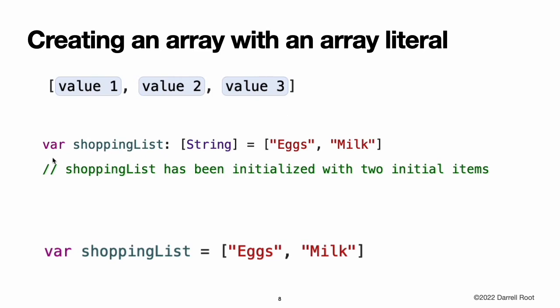Creating an Array with an Array Literal. This example shows how to create an array called shoppingList to store string values. The shoppingList variable is declared as an array of string values, written as [String]. Because this particular array has specified a value type of string, it is allowed to store string values only. The shoppingList array is initialized with two string values, eggs and milk, written within an array literal. The shoppingList array is declared as a variable with the var introducer and not a constant with the let introducer, because more items are added to the shoppingList in the examples below.